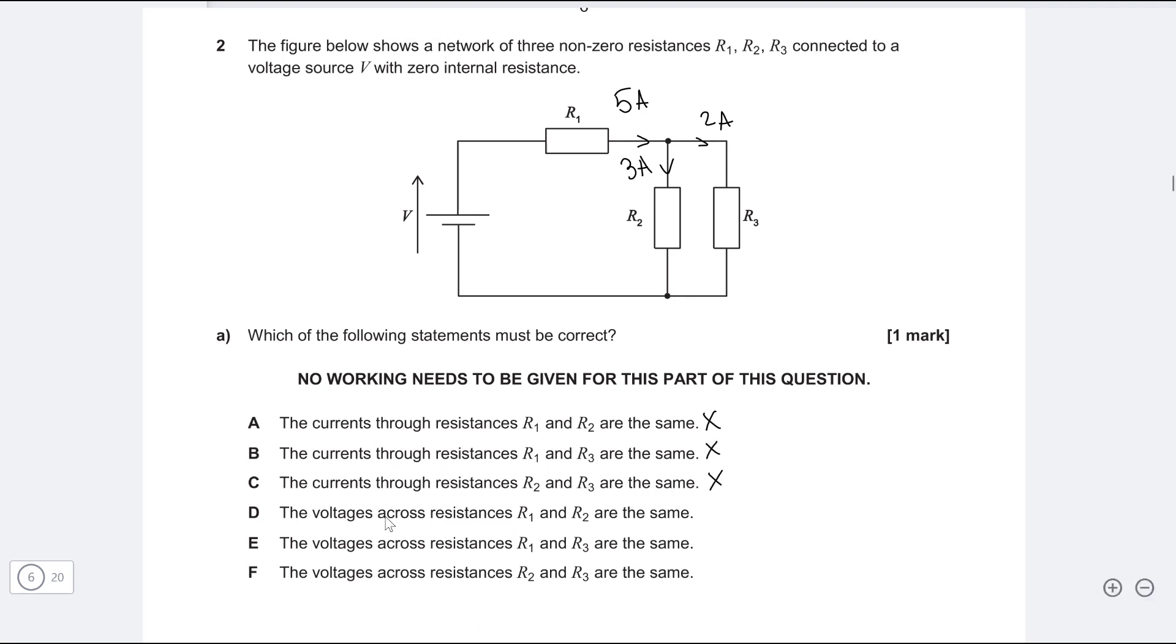Part D says that the voltages across R1 and R2 are the same. Once again, this is not necessarily correct. It could be, but it doesn't have to be. Part E, the voltages across R1 and R3 are the same. Well, that's not going to be the case.